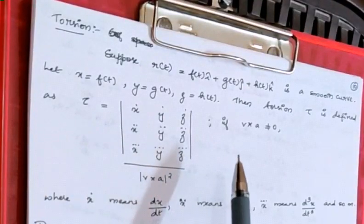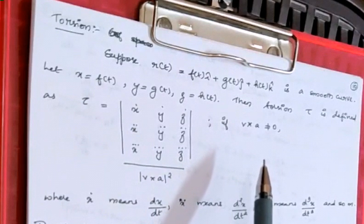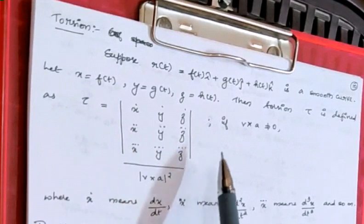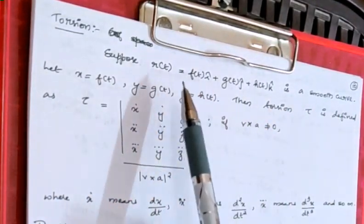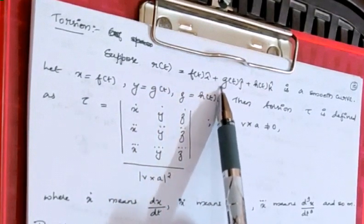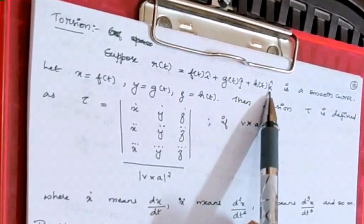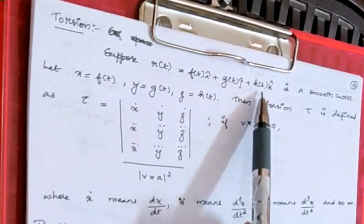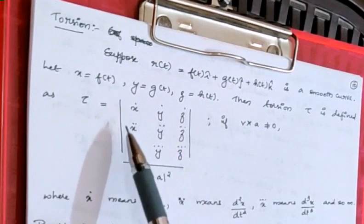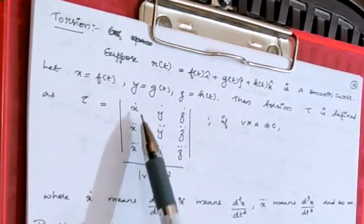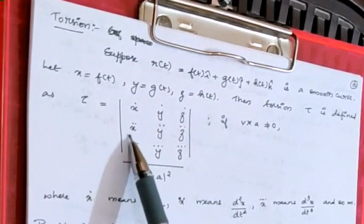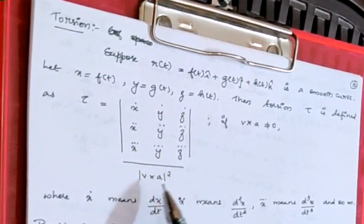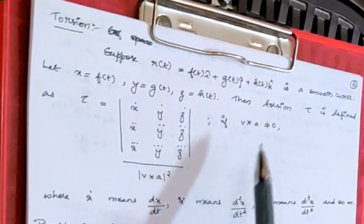Next is torsion, which we had already seen before — the torsion of space curves. Here again we are seeing it as a simpler definition. Suppose you are given a smooth curve's equation as r(t) = f(t)i + g(t)j + h(t)k. Then let f(t) be taken as x, g(t) as y, and h(t) as z. Then the torsion τ is defined as the determinant of [x̊, ẙ, ż; ẍ, ÿ, z̈; x⃛, y⃛, z⃛] divided by |v × a|²,